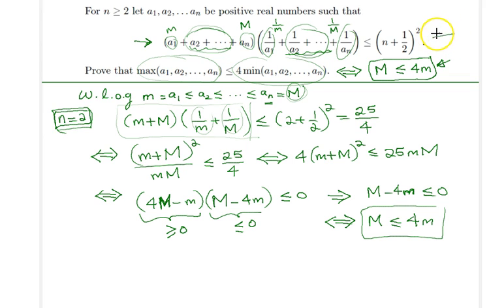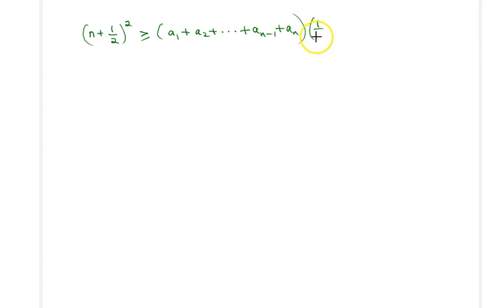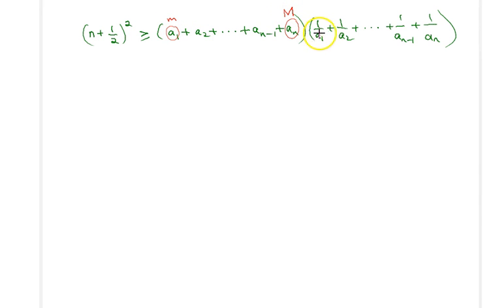Let's rewrite the given condition: (n + 1/2)² ≥ (a_1 + a_2 + ··· + a_{n-1} + a_n)(1/a_1 + 1/a_2 + ··· + 1/a_{n-1} + 1/a_n). Remember that a_1 = little m, a_n = capital M, 1/a_1 = 1/little m, and 1/a_n = 1/capital M. The trick is to rewrite the second product by exchanging the first and last terms.